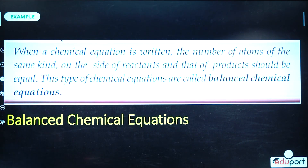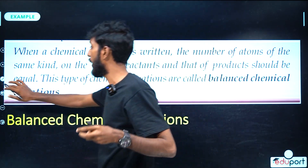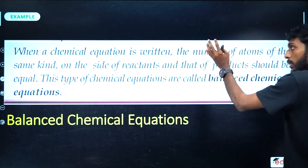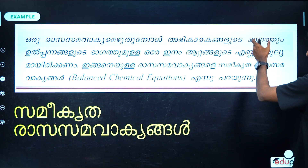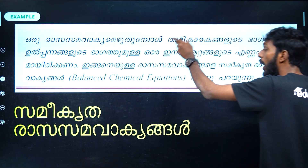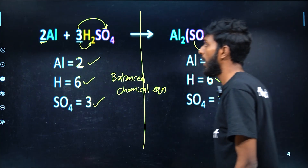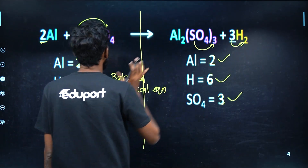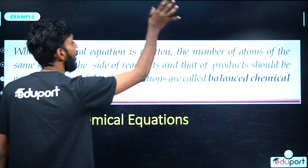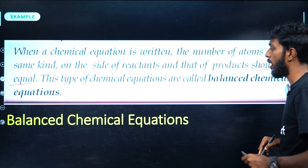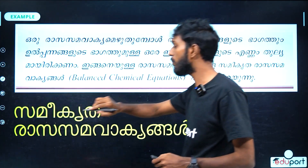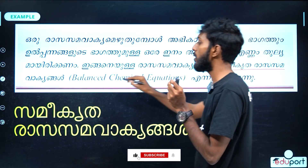Now, what is a balanced chemical equation? When a chemical equation is written, the number of atoms of the same kind on both sides should be equal. This type of chemical equation is a balanced chemical equation.